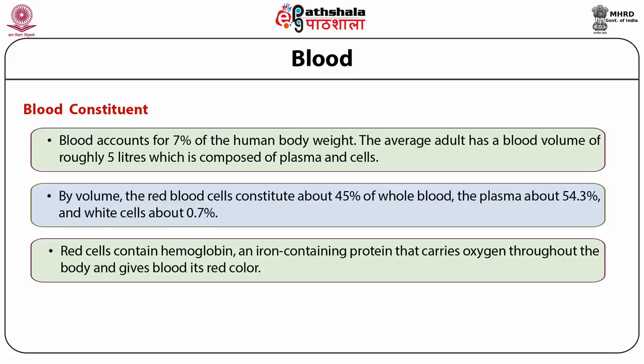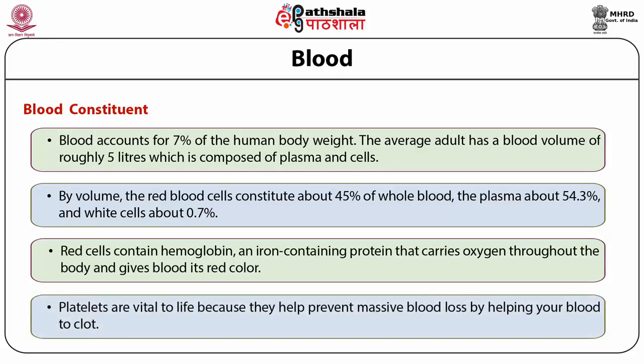Red cells contain hemoglobin, an iron-containing protein that carries oxygen throughout the body and gives blood its red color. White blood cells, also called leukocytes, are an important part of the immune system. These cells help fight infections by attacking bacteria, viruses and germs that invade the body. White blood cells originate in the bone marrow but circulate throughout the bloodstream. Platelets are vital to life because they help prevent massive blood loss by helping blood to clot.